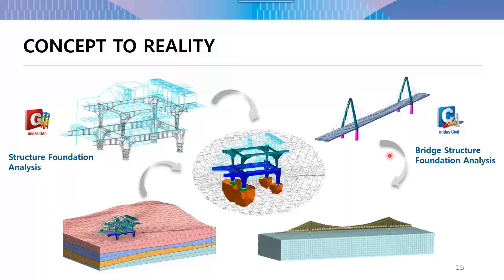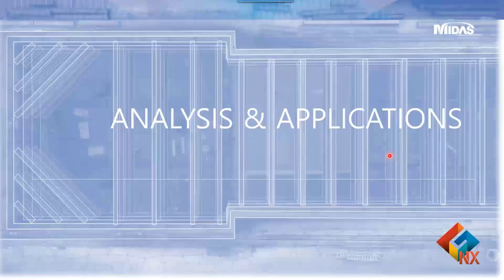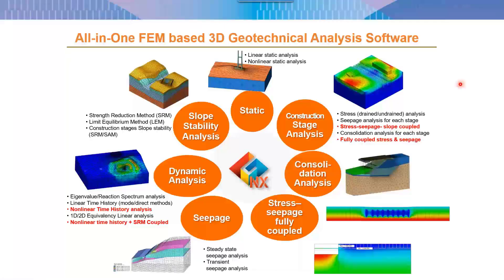GTS NX is an all-in-one FEM-based platform supporting axisymmetric 2D and 3D integrated geotechnical analysis in a single software environment. Analysis types include: non-linear and linear static analysis; slope stability using the Strength Reduction Method (c-phi reduction) or the Limit Equilibrium Method (LEM); and construction stage analysis — for example, to track factor of safety changes as you excavate a hillside across multiple stages.